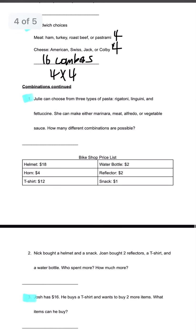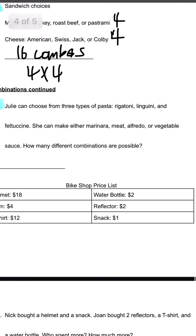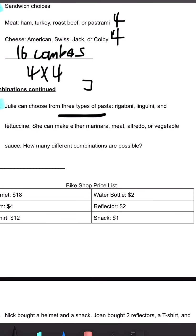All right. Combinations continued. Julie can choose from three types of pastas. She can make four different sauces. So three times four, and there are 12 combos.